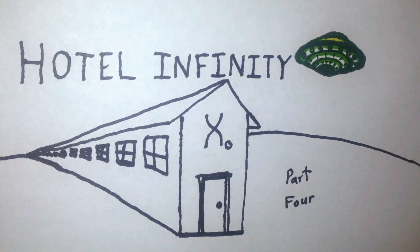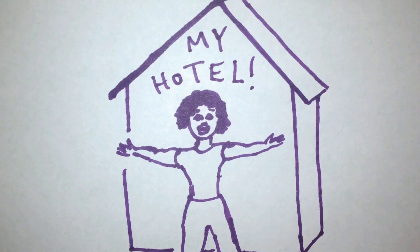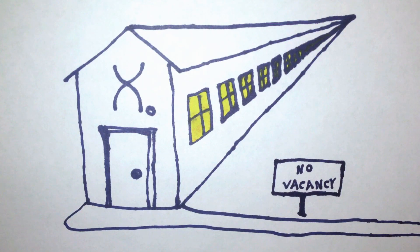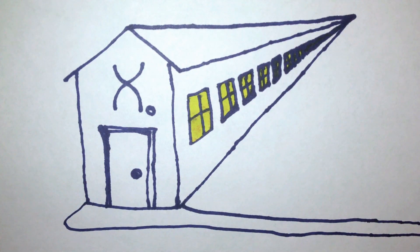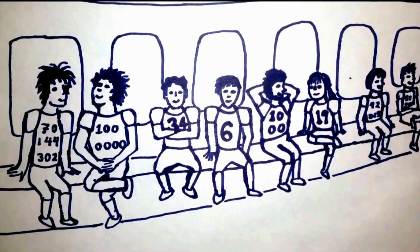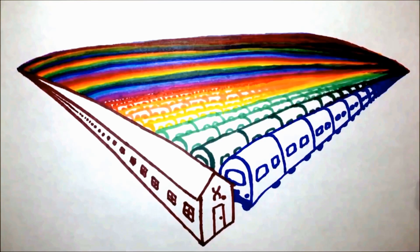Hotel Infinity, Part 4. Recap: You run a hotel with an infinite number of rooms. When the rooms are full, you can make space for new guests by rearranging your current occupants. You can even make room for a sports team with an infinite number of players. But one night, an infinite number of infinite teams show up at once. Is it possible to accommodate them?